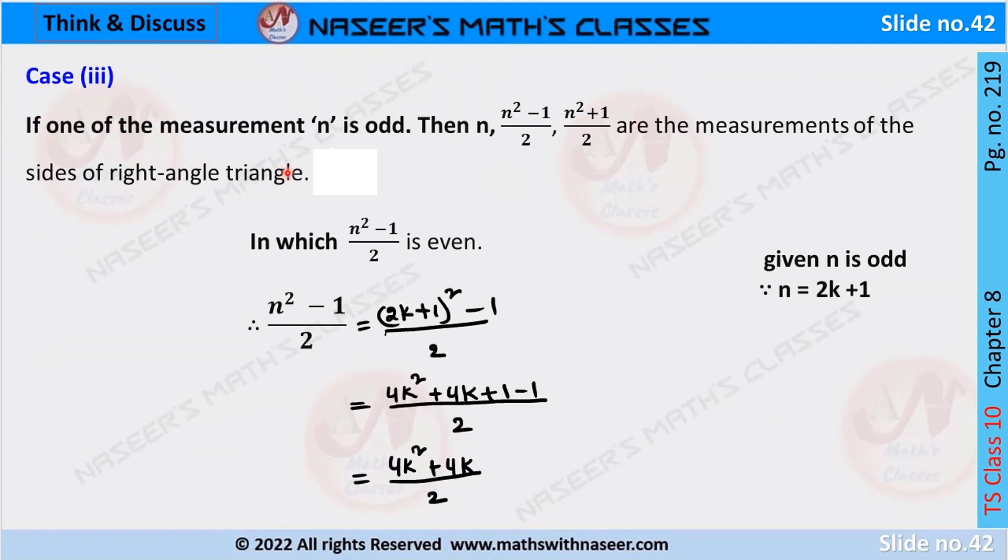Case 3: If one of the measurements n is odd, then n, n squared minus 1 by 2, n squared plus 1 by 2 are measurements of the sides of a right-angle triangle, in which n squared minus 1 by 2 is even.